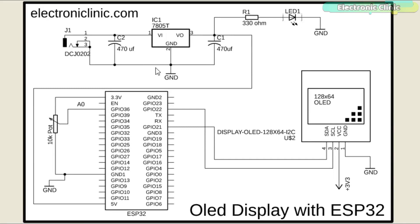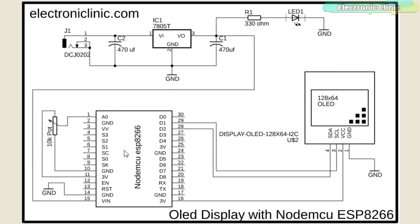A 5V regulator power supply based on the 7805 voltage regulator is used to power up the ESP32. A wire from the output of the voltage regulator is connected with the 5V pin of the ESP32. Make sure the ground of the 5V power supply is connected with the ground of the ESP32. A potentiometer is connected with analog pin A0, which is GPIO36, with its other two legs connected to 3.3V and ground. The OLED display module SCL and SDA pins are connected with GPIO pins 22 and 21, while the VCC and ground pins are connected with 3.3V and ground.